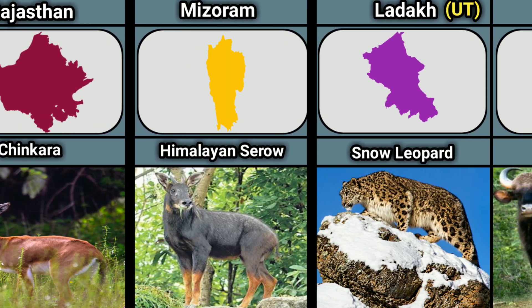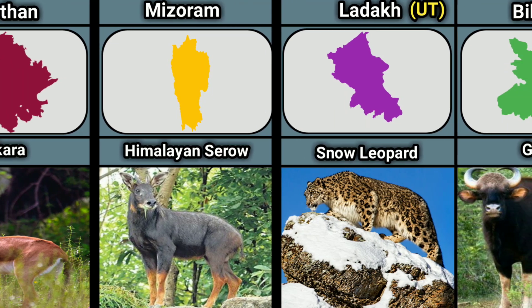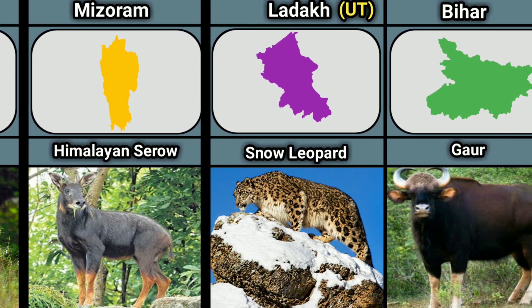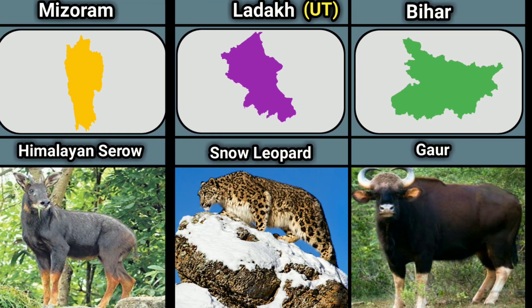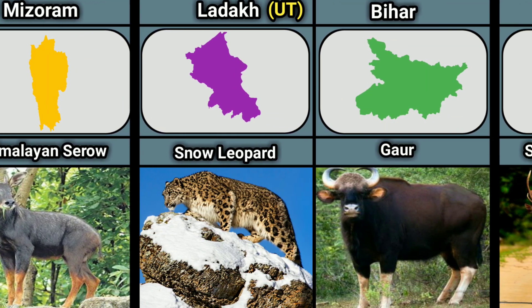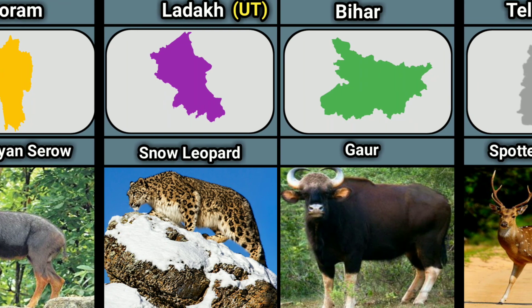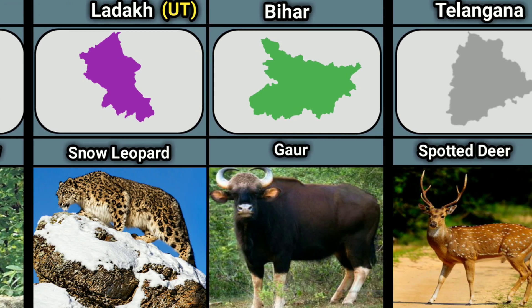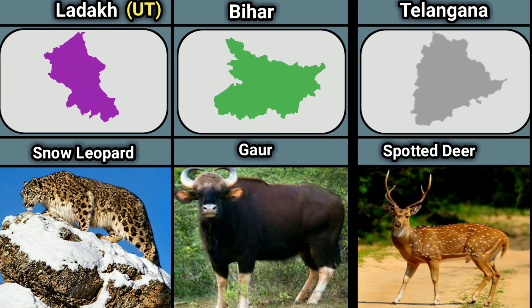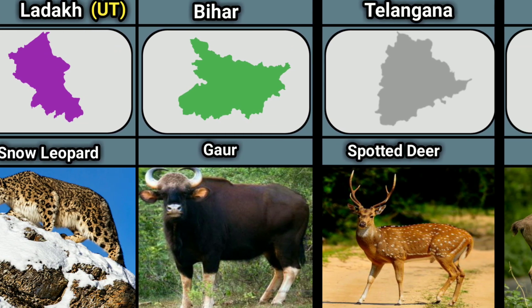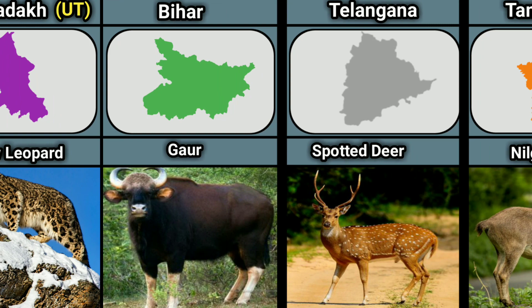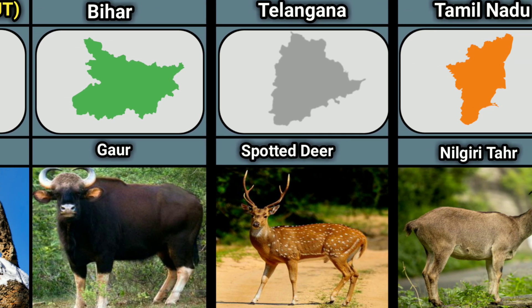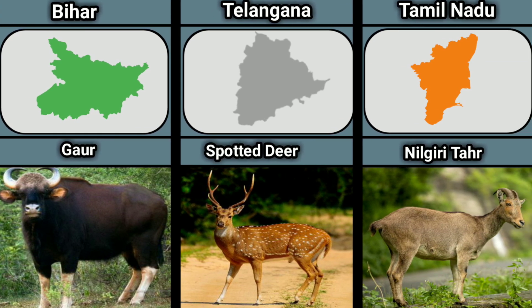Bihar — Gaur. Telangana — Spotted Deer. Tamil Nadu — Nilgiri Tahr.